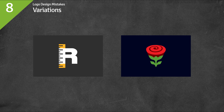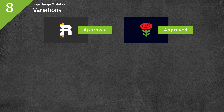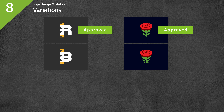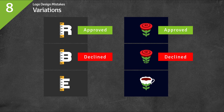Mistake number eight: variations of the same logo. This is an easy one — we should not even have to discuss it. When you complete a logo, you cannot make variations of that logo and sell those variations as separate logos. That is not how it works, not on LogoGround and not anywhere. Every logo has to start life on a blank page. If you upload variations of the same logo onto LogoGround, it will not only be declined, it could earn you a warning, or in a more extreme case, it could even get you banned from LogoGround. Blank page, please, every time.